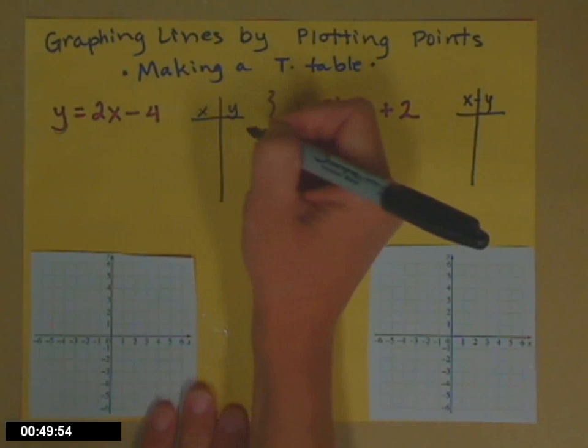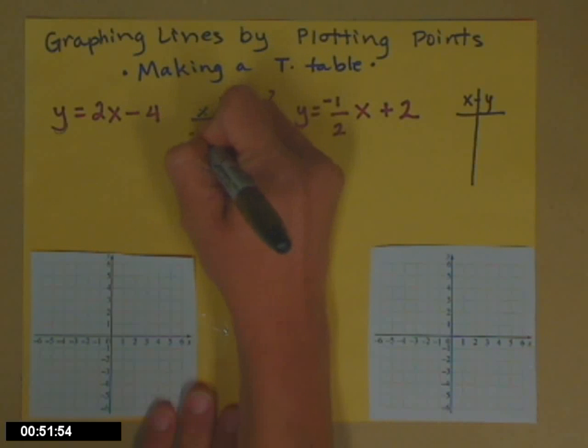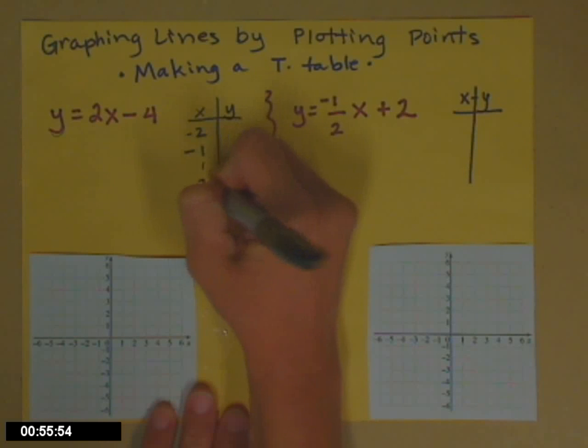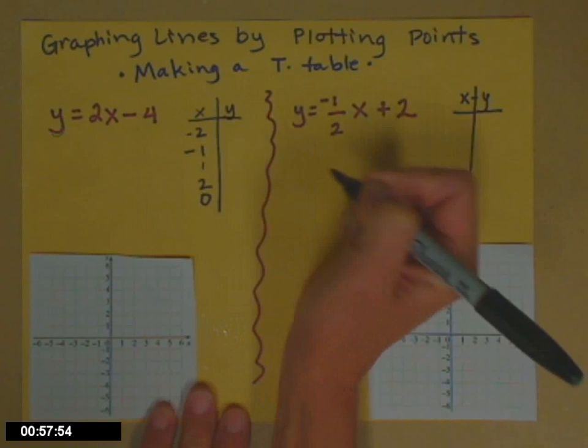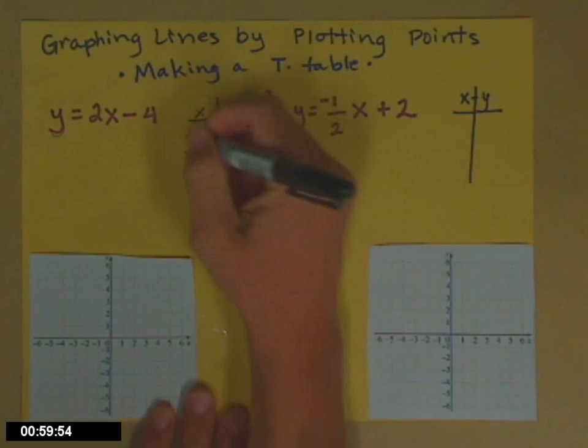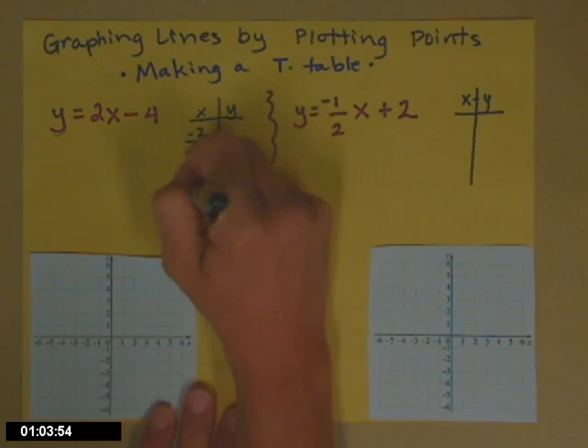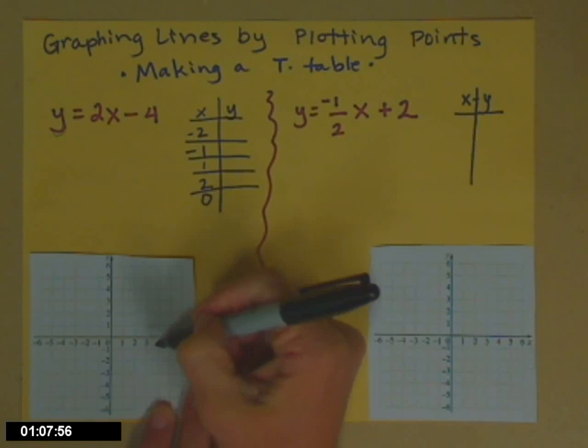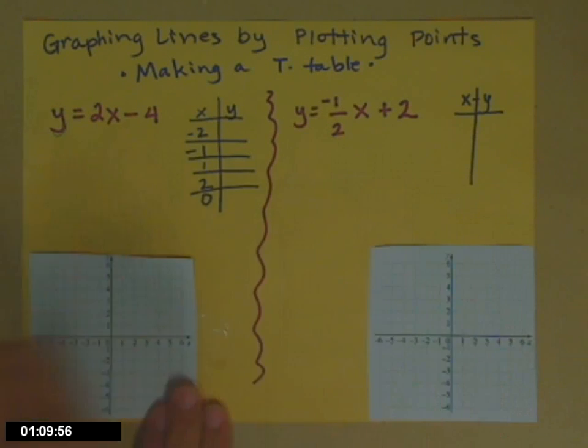Kind of a good rule of thumb is you take a couple of negative ones, a couple of positive ones, and 0 is always a nice one. So look, we're going to find 5 points, 5 ordered pairs that work in this equation. Then we will plot them and connect them. Hopefully they will end up on the line.